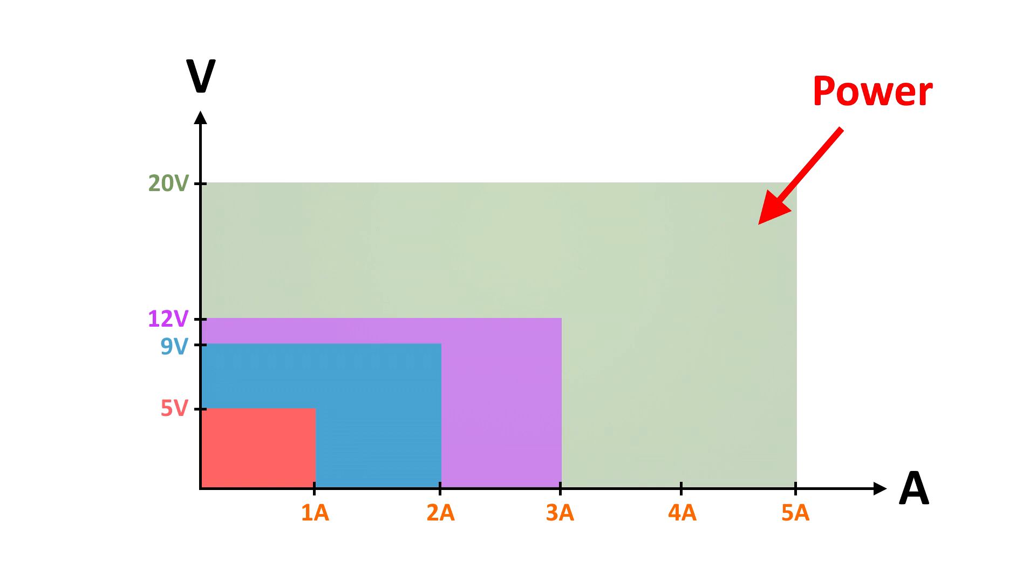And if you can supply 20 volts and something as high as 5 amps, you have that greenish box, which is a whole boatload more power. In fact, up to 100 watts of power over what appears to be a simple USB cable.